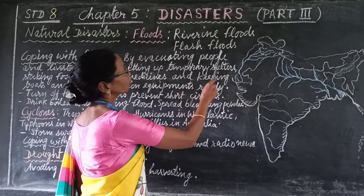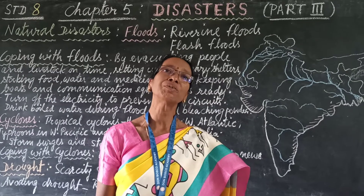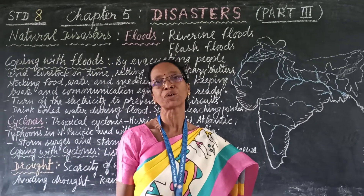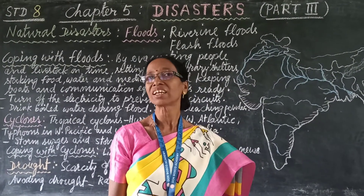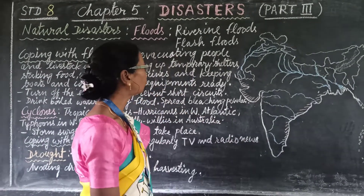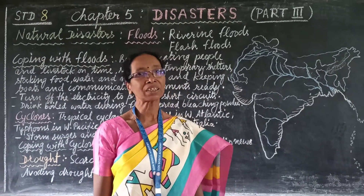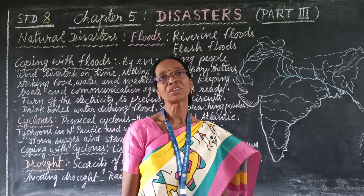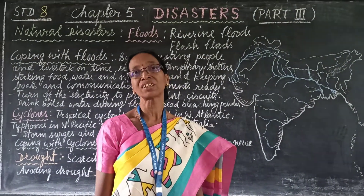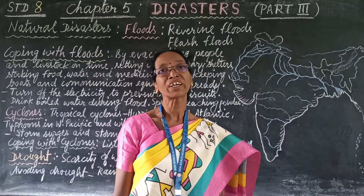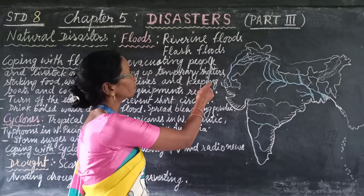Revival floods and flash floods. Revival floods take place in rivers — when the river water overflows, there is flooding in the low-lying areas along with the river. Flash floods take place all of a sudden, when there is very heavy rainfall, a dam is destroyed due to an earthquake, or if there is a landslide.